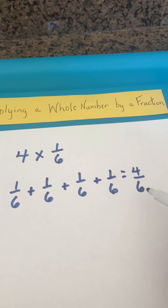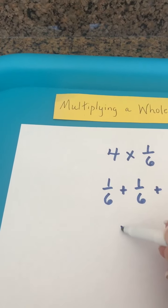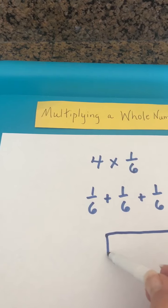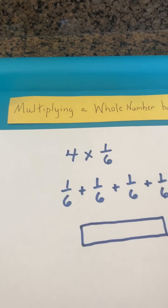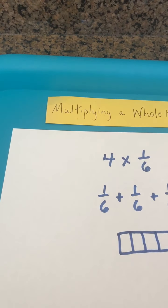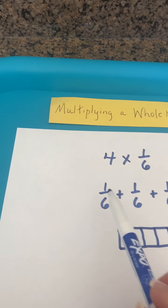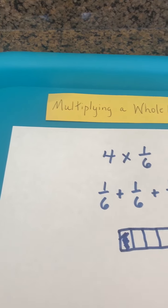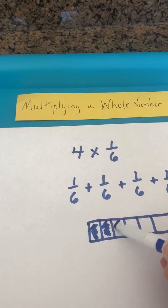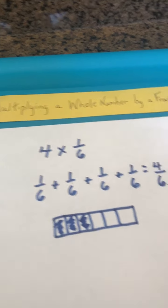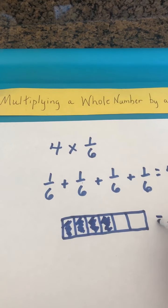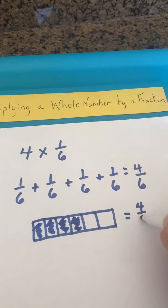We see that our denominator is six. I prefer the fraction strips, so I'm going to draw my rectangle and break it up into six parts. I'm going to represent one-sixth by shading in one-sixth, then shade in the second one-sixth, the third one-sixth, and then my fourth and final group of one-sixth. And now we have our model of four-sixths.